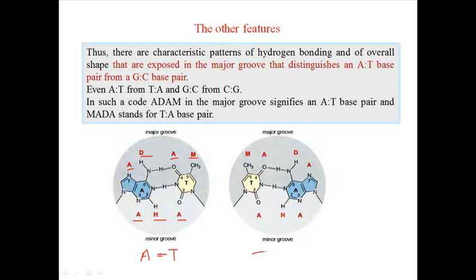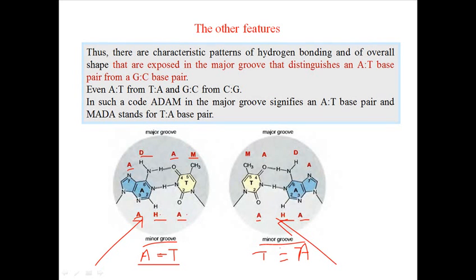If we look at the TA pair — also a pair made with two hydrogen bond interactions — in the minor groove we again have: acceptor, hydrogen, and acceptor, which is the same as the AT pair. So whether the bonding is AT or TA, we cannot distinguish by looking at the minor groove. In both cases through the minor groove we see acceptor, hydrogen, acceptor — these two things are the same. So looking at the minor groove, we cannot distinguish between AT and TA.